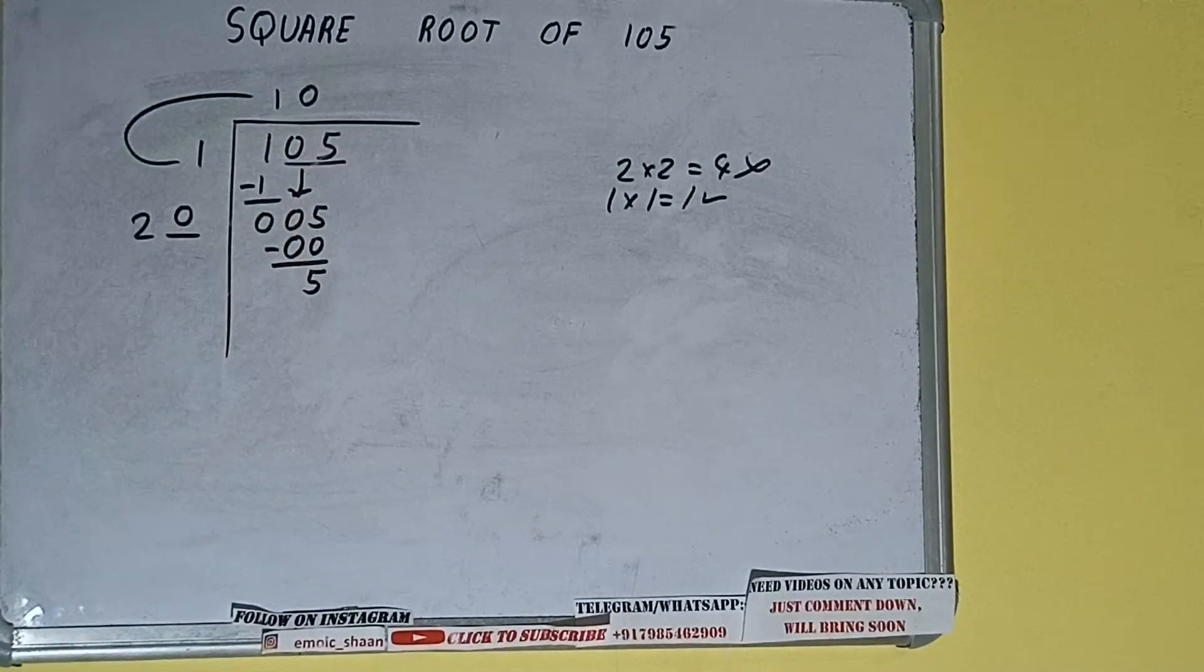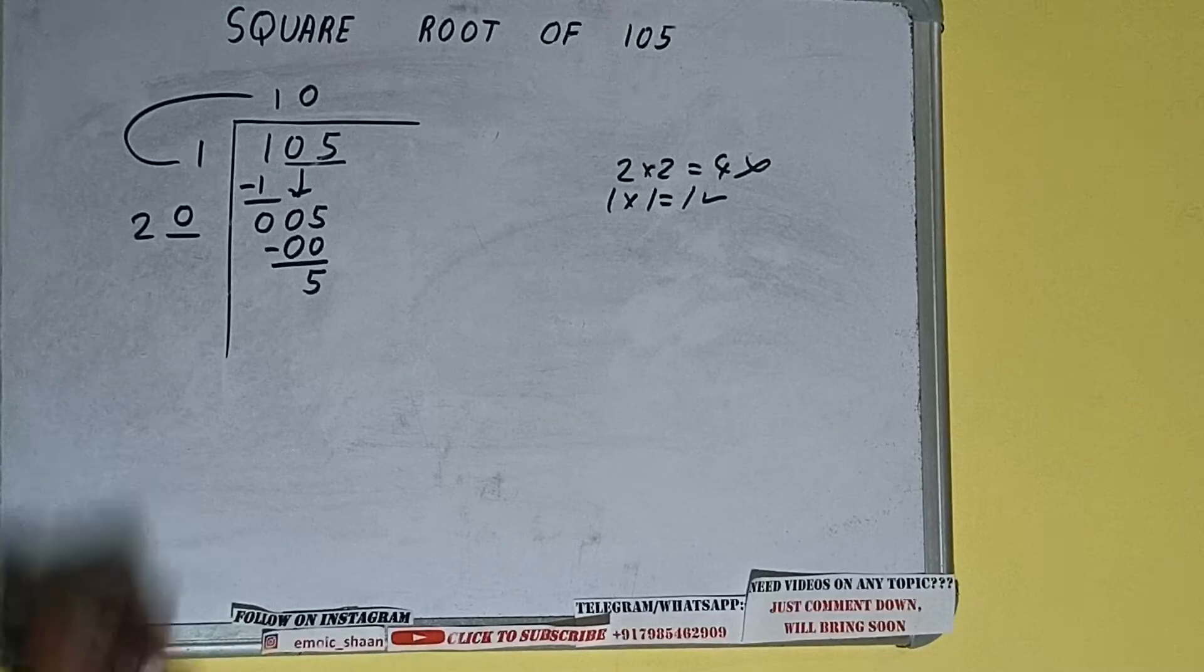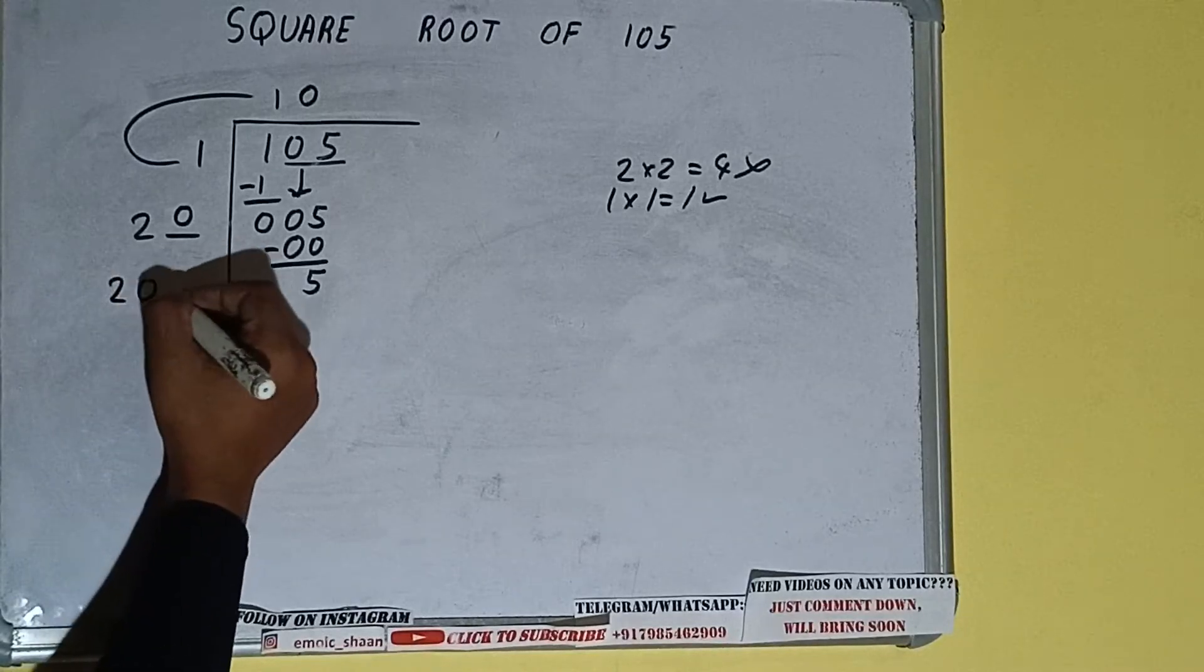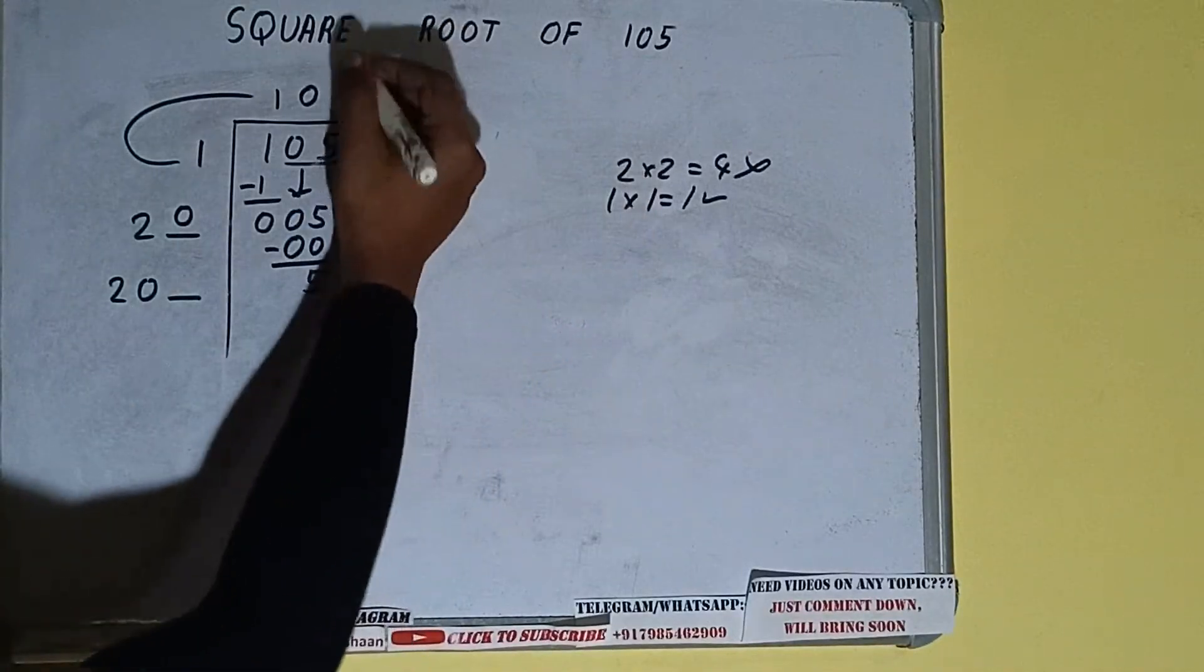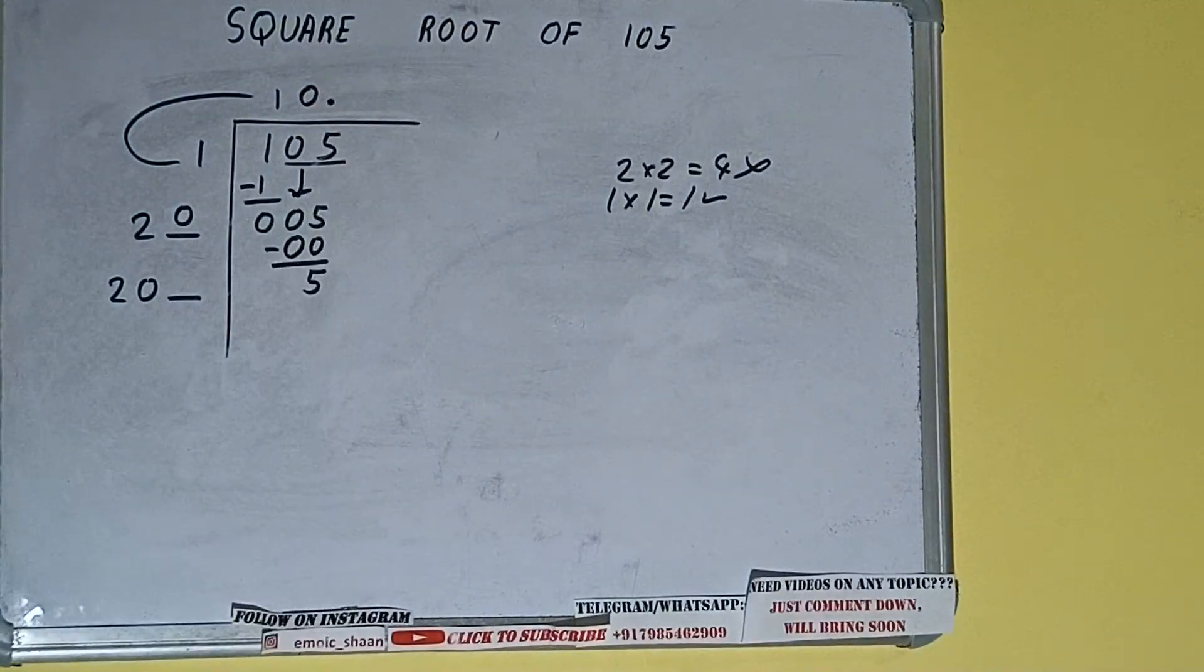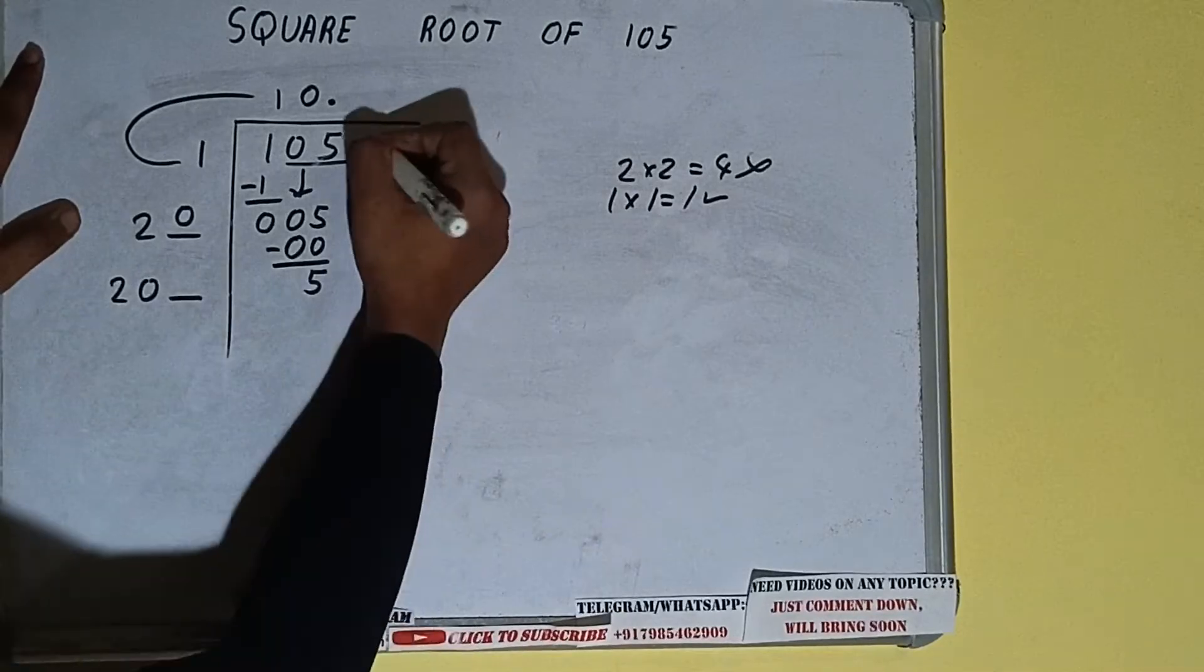Now 20 into zero added so add both. So 20 plus zero will be once again 20 but one digit extra. And this number we need to make it big but we don't have more pairs so we'll put decimal. Once we put decimal we can bring pair of zeros down.